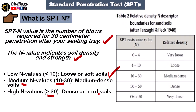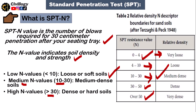Here is a chart representing the relative density of soil based on N value. If N is between 0 and 4, the soil is very loose. Between 4 and 10 is loose. Between 10 and 30 is medium dense. Between 30 and 50 is dense. And if N is greater than 50, the soil is very dense and hard.